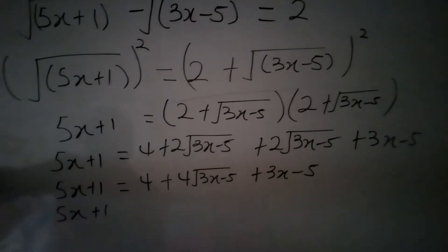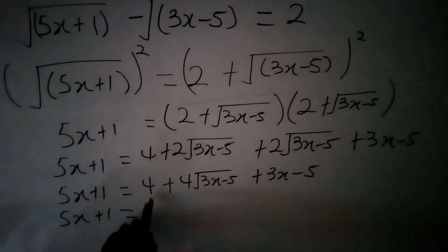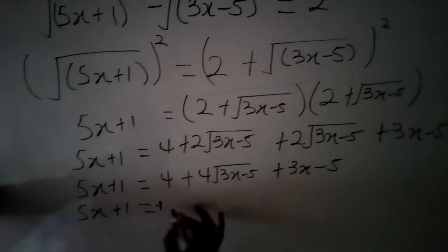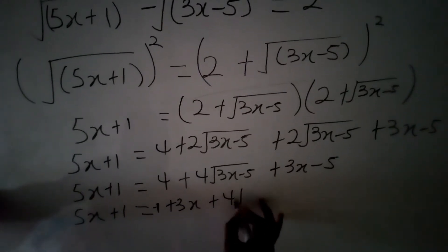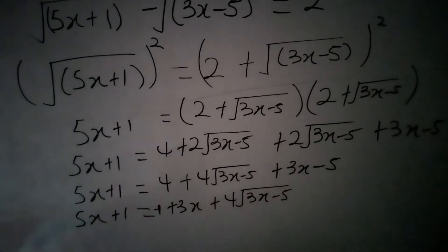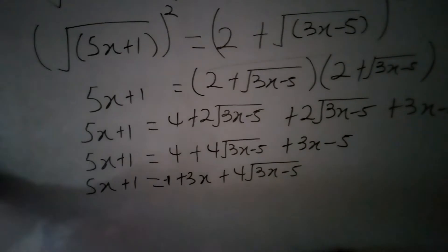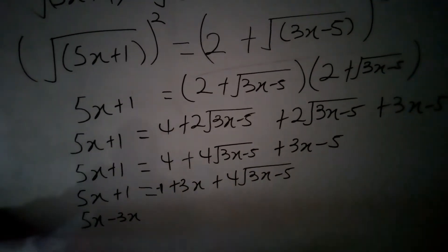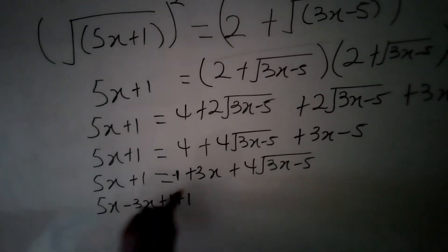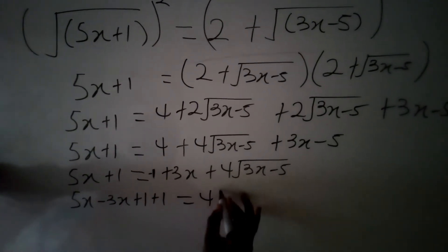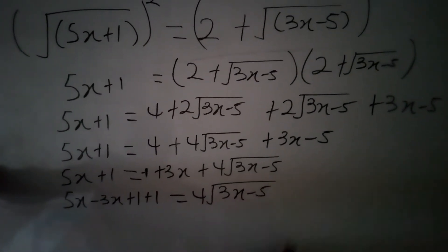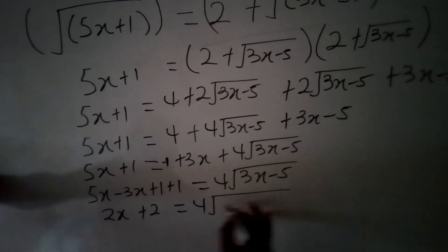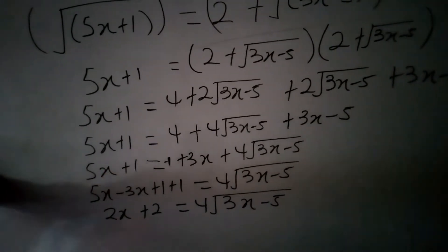5x plus 1 equals — we can do some algebra here: we have 4 minus 5, giving us negative 1, and we have positive 3x plus 4 root of 3x minus 5. Now we group like terms: 5x minus 3x gives us positive 2x, and negative 1 plus 1 gives positive 1 on the right, equal to 4 root of 3x minus 5.